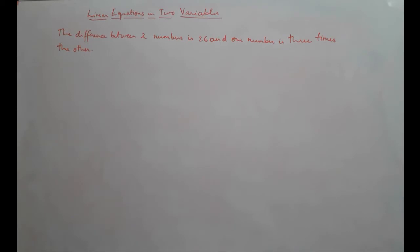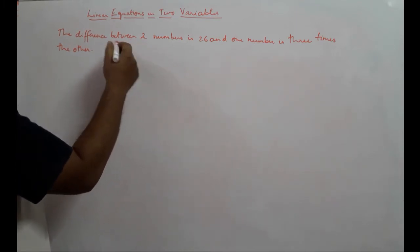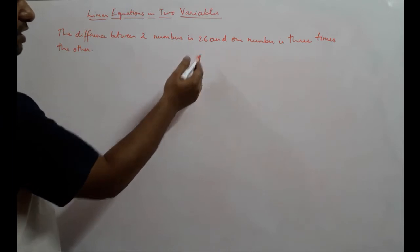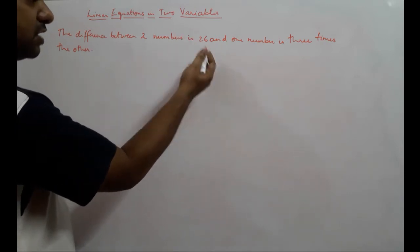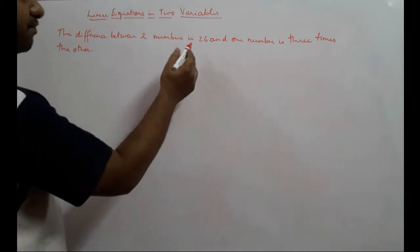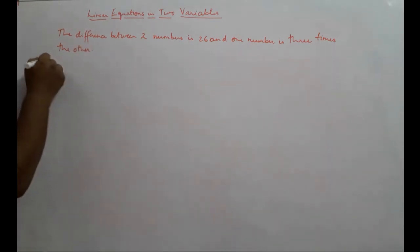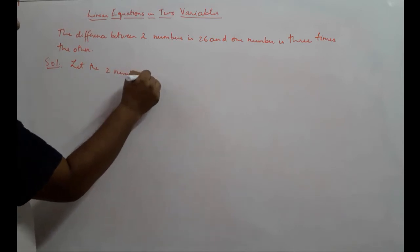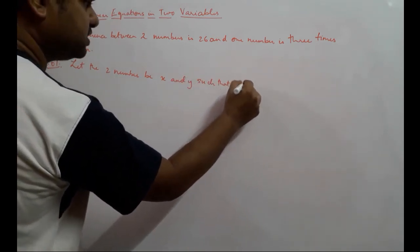The problem says the difference between two numbers is 26 and one number is three times the other. We have two numbers and we do not know what those numbers are. We can safely assume they are x and y. The difference between two numbers is 26, meaning when you subtract one number from the other you get 26. Let the two numbers be x and y such that x is greater than y.